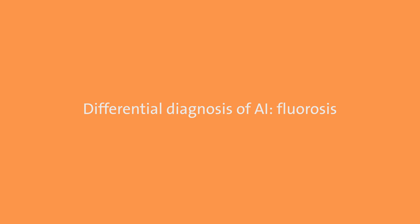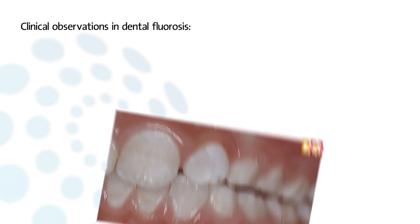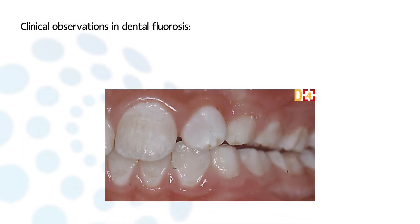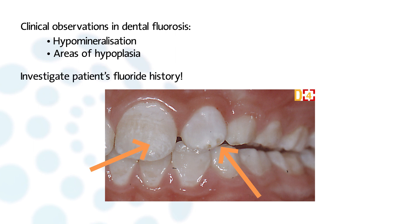Fluorosis is one of the most common forms of differential diagnosis in amelogenesis imperfecta. In the mildest forms, fluorosis manifests as a defect of maturation. Clinically we see hypermineralization, ranging from tiny white flecks to confluent opacities, with areas of hypoplasia in the most severe cases. Investigation of the patient's fluoride history is necessary to confirm the diagnosis.